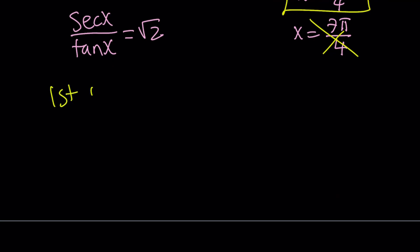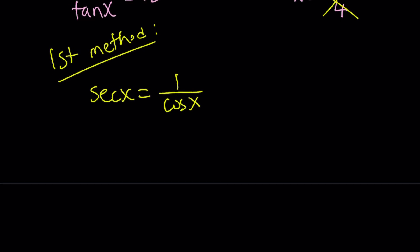Okay, let's go ahead and take a look at the first method. So I kind of like the first method a little better, because it avoids extraneous solutions. And the reason for that is we're not squaring both sides. So secant is 1 over cosine, and tangent can be written as sine over cosine.